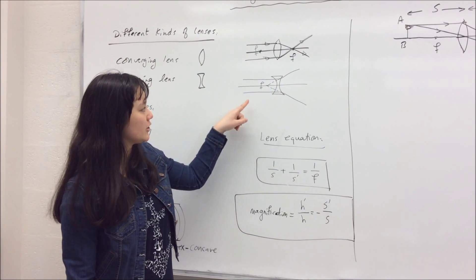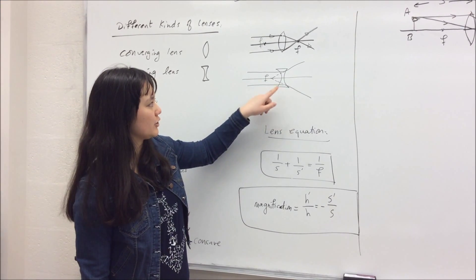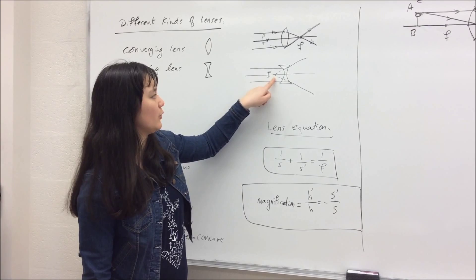And for a diverging lens, the light rays come in, and when it reaches the lens, they diverge away from each other, but if you trace them back, then you see they meet at the focal point here.